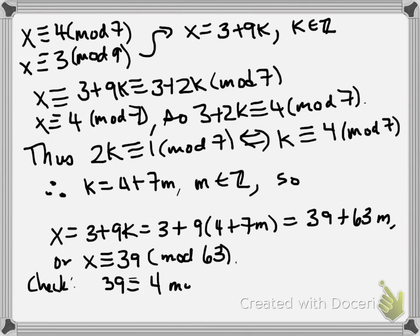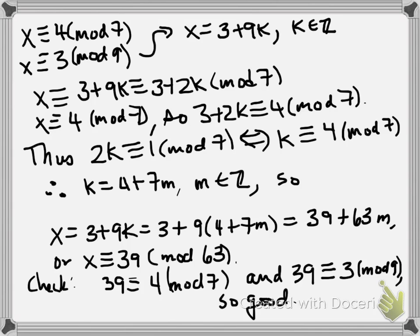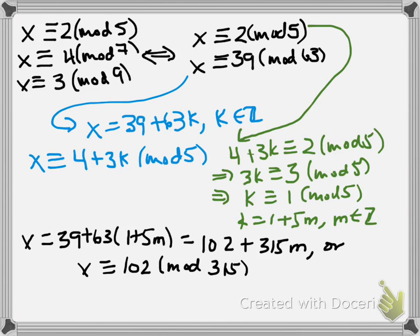Let's double check: 39 is congruent to 4 mod 7, yep, and 39 is congruent to 3 mod 9, so we're all good. Okay, let's take a look at the next problem.